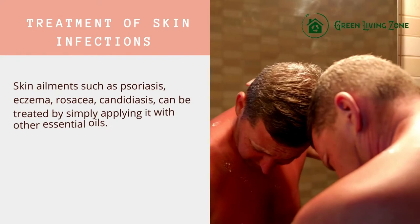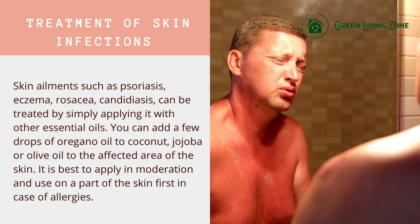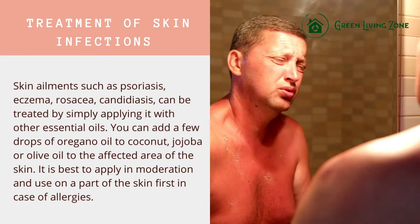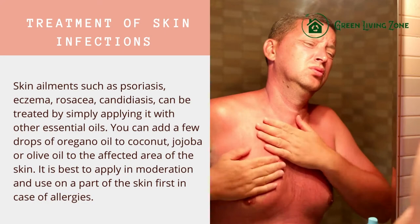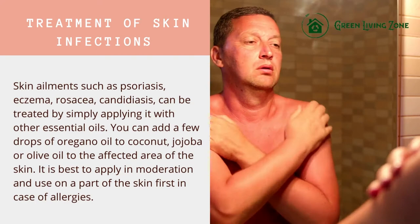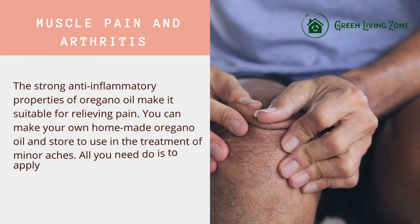Treatment of skin infections: skin ailments such as psoriasis, eczema, rosacea, and candidiasis can be treated by applying oregano oil with other essential oils. You can add a few drops to coconut, jojoba, or olive oil and apply to the affected area of the skin. It is best to apply in moderation and test on a small part of the skin first in case of allergies.